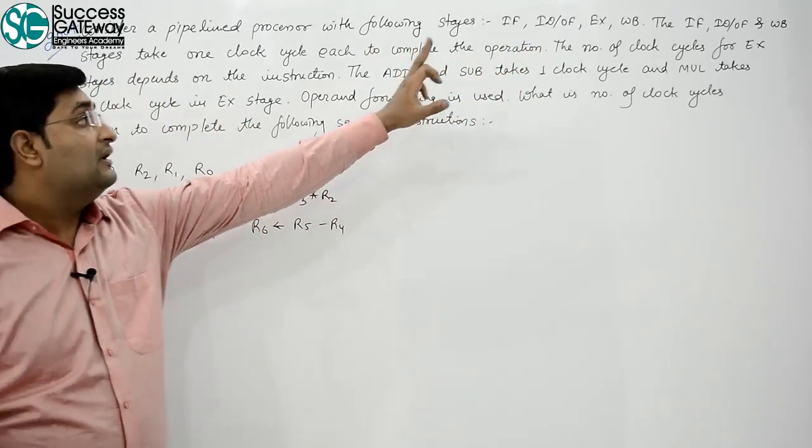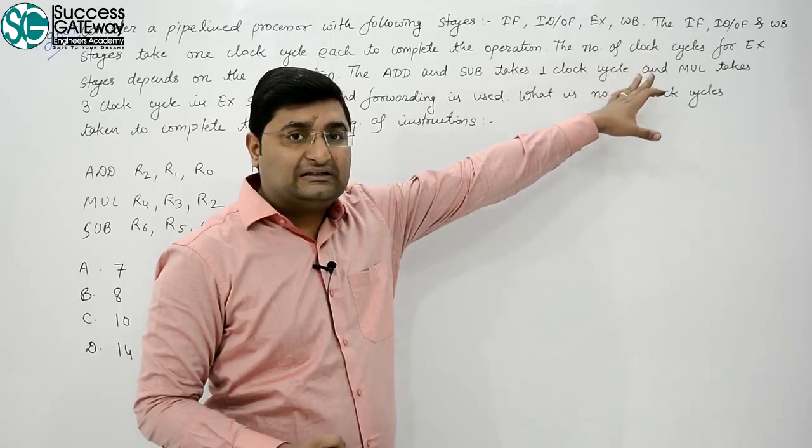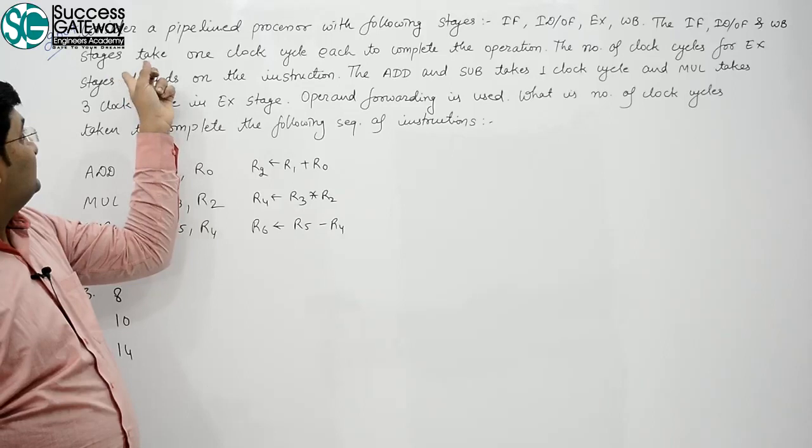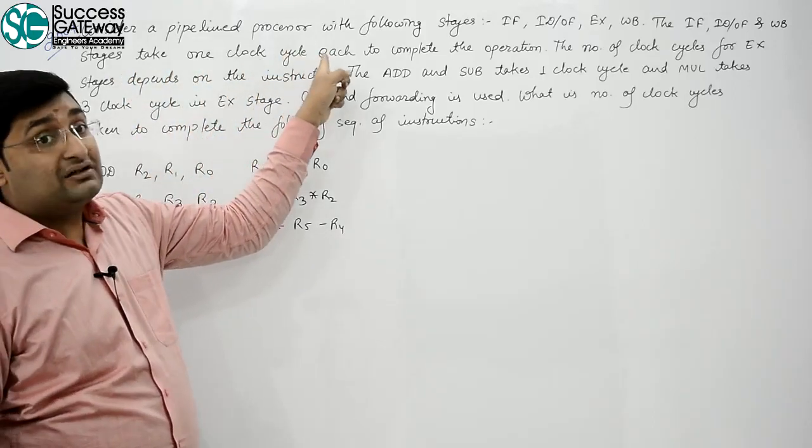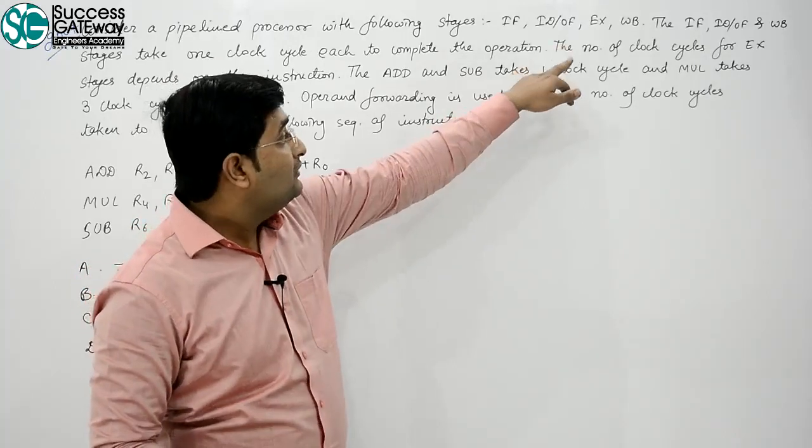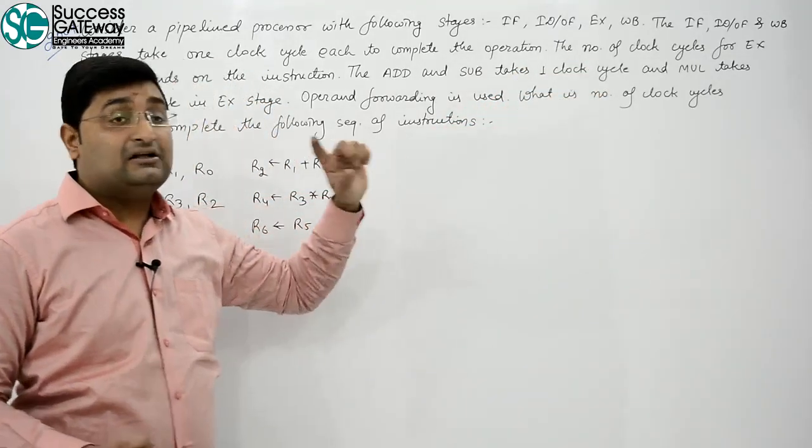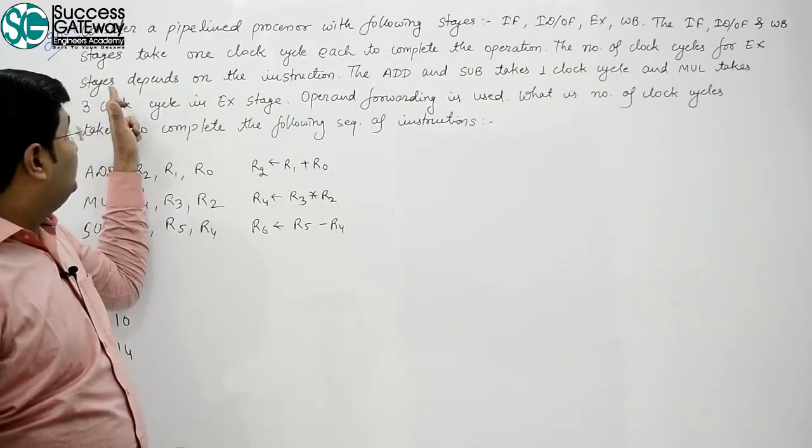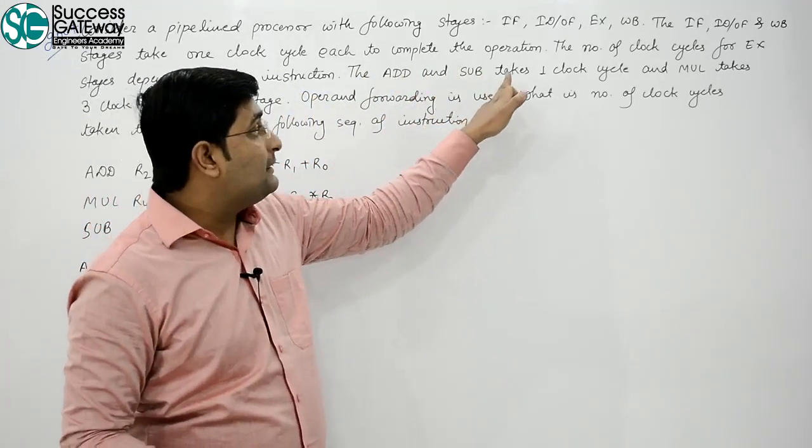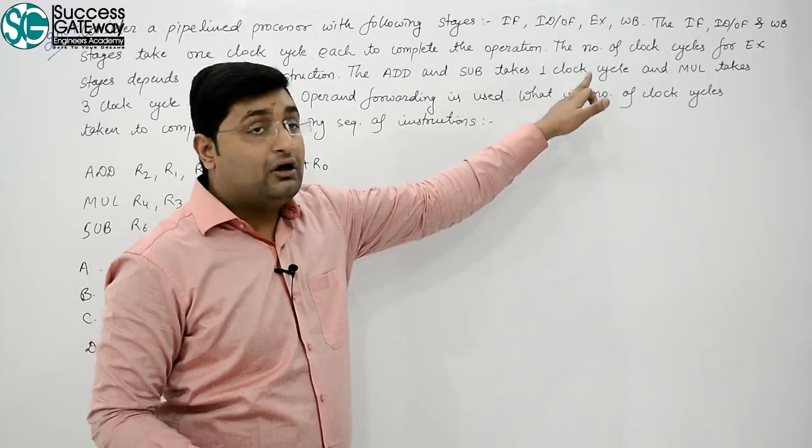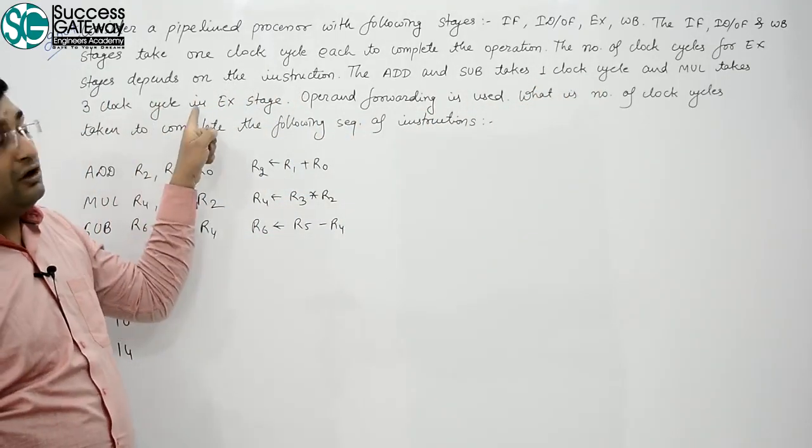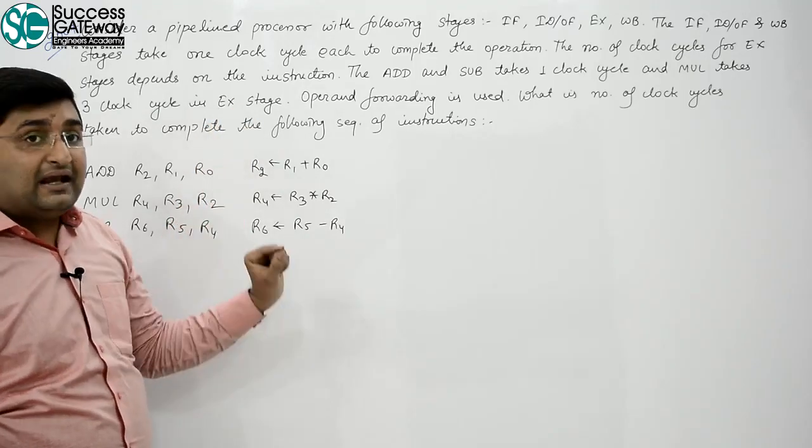The IF, IDOF that is instruction decode and operand fetch, and WB stage takes one clock cycle each to complete the operation. The number of clock cycles for EX stage depends on the instruction. The ADD and SUBTRACT takes one clock cycle and MULTIPLICATION takes three clock cycles in EX stage.